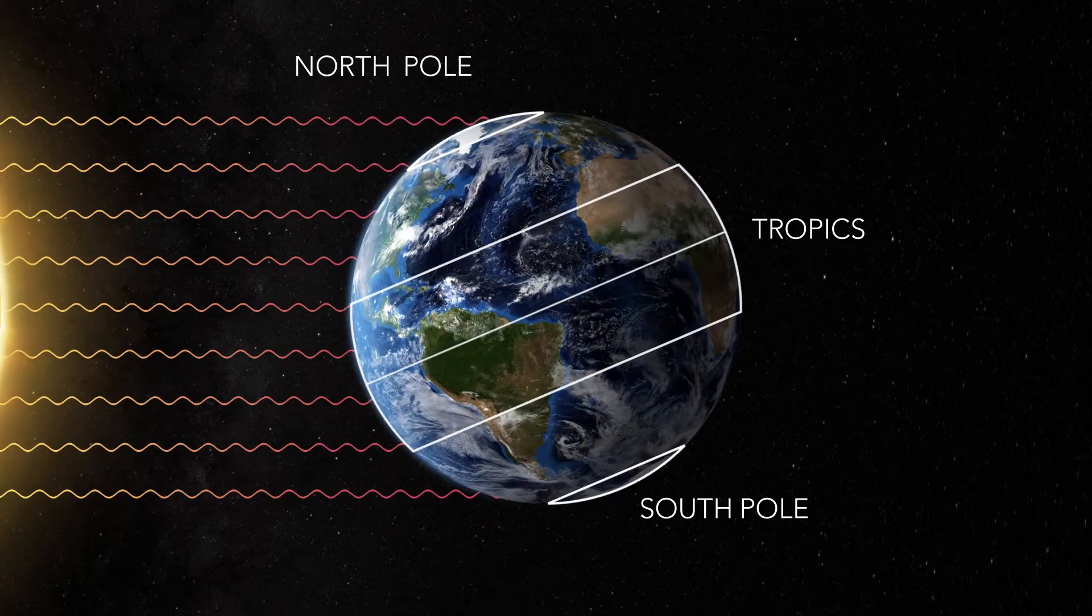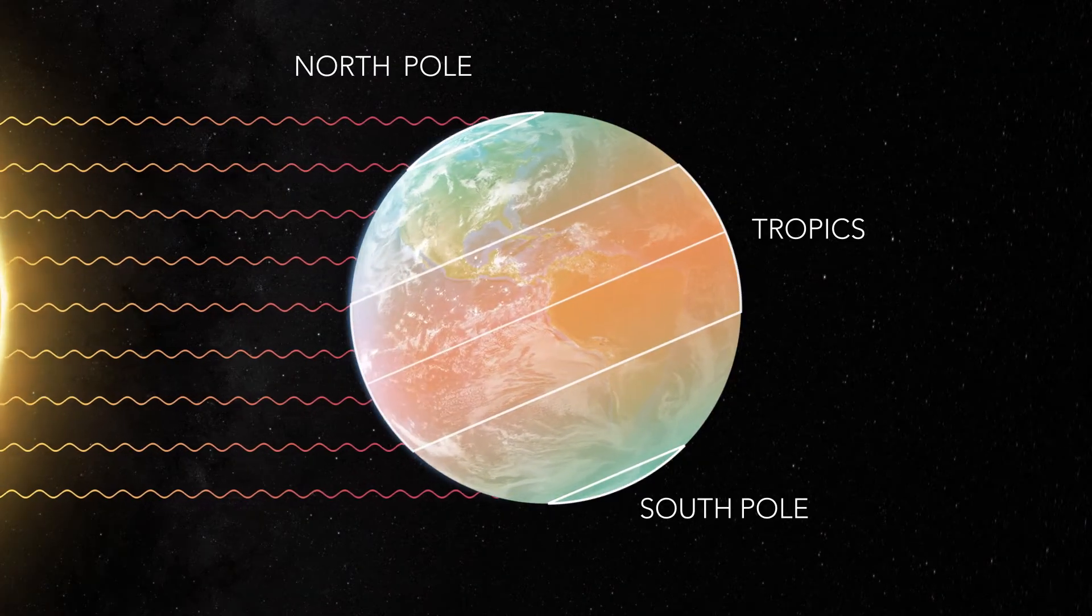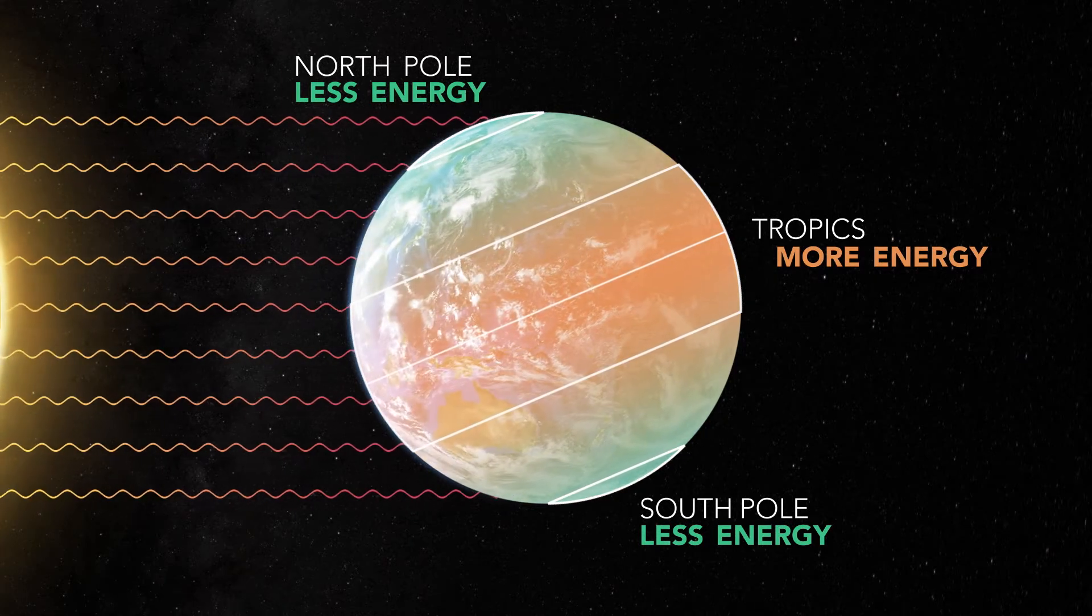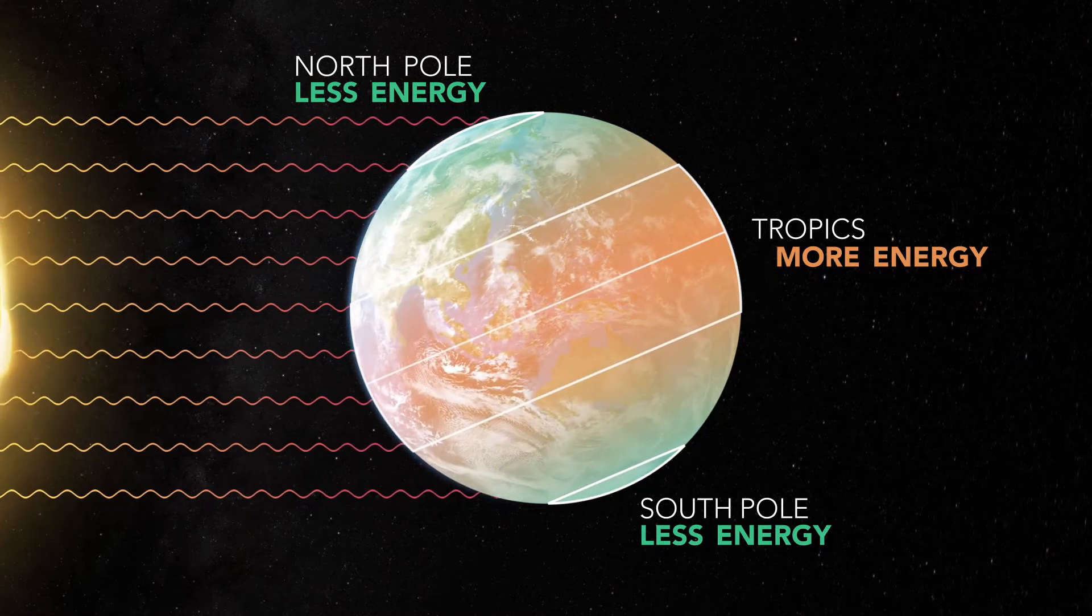This leads to a big imbalance of energy, with the tropical regions of the ocean and atmosphere receiving more energy and thus being warmer and less dense than the poles. The atmosphere and ocean circulations exist to remove this imbalance by moving the heat towards the poles.